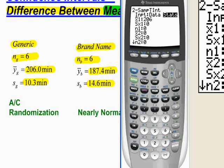So this is 206 for the sample mean with a standard deviation of 10.3 and a sample size of 6. Then I get to the second one, 187.4. The next one, the standard deviation for the brand name was 14.6. And then the sample size for the brand name was 6.